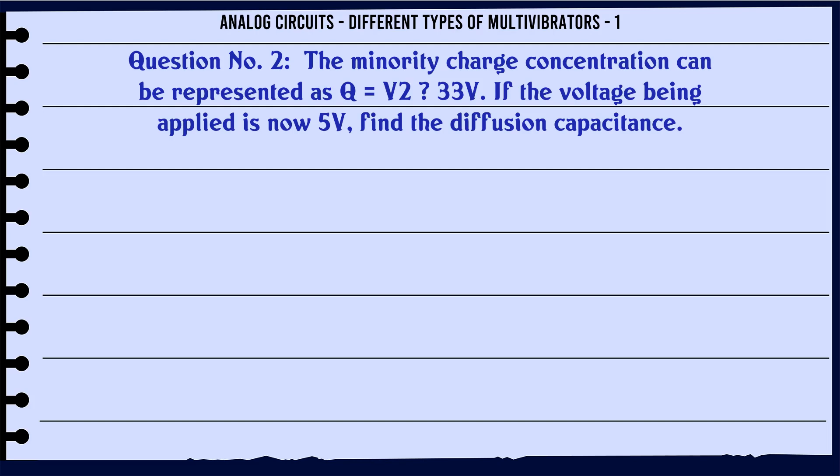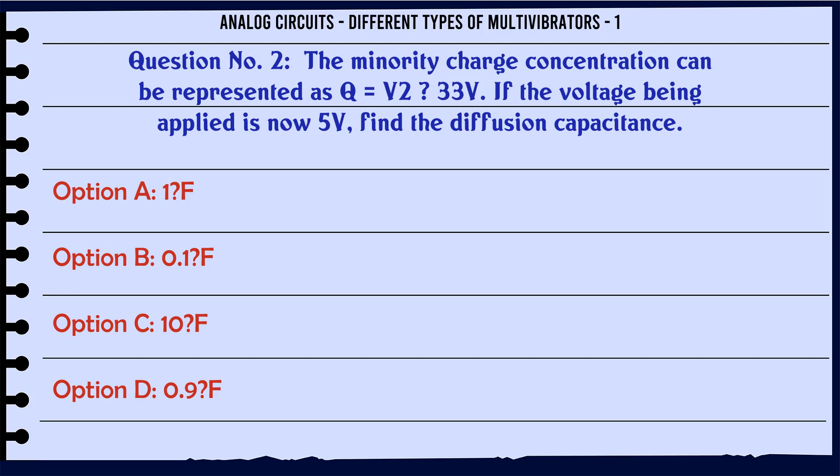The minority charge concentration can be represented as Q = V/2V₃. If the voltage being applied is now 5V, find the diffusion capacitance. A: 1 F. B: 0.1 F. C: 10 F. D: 0.9 F.